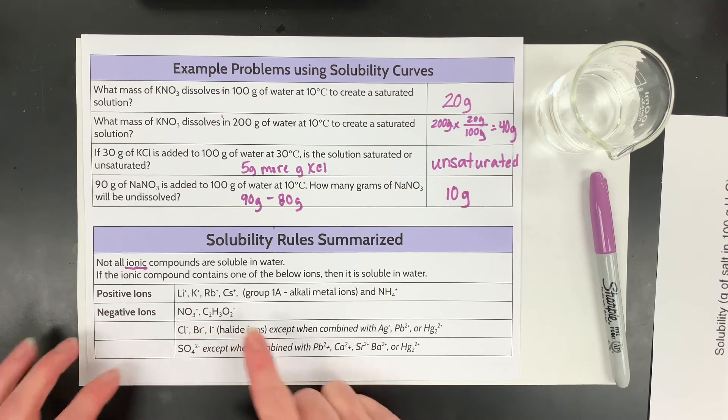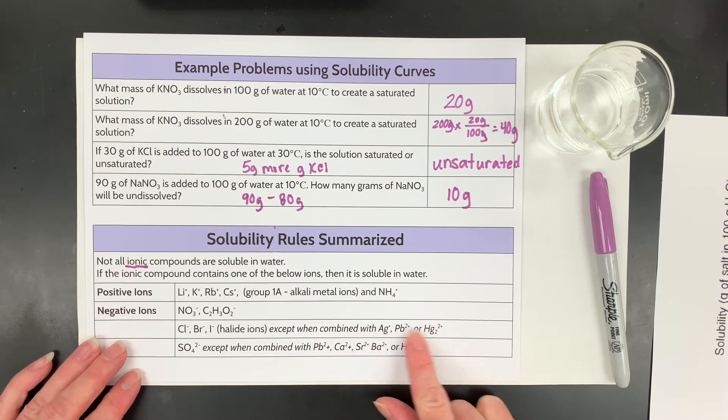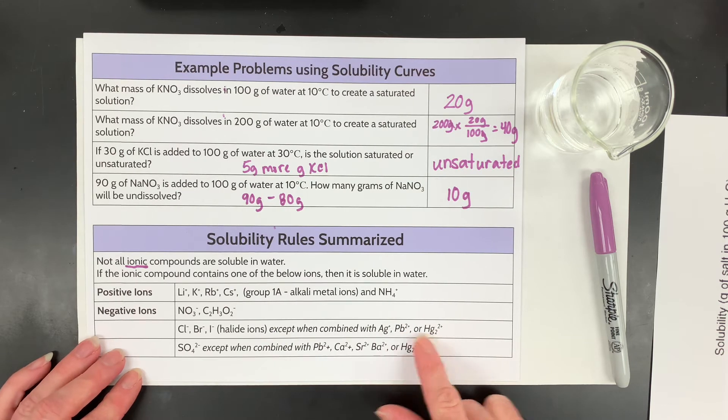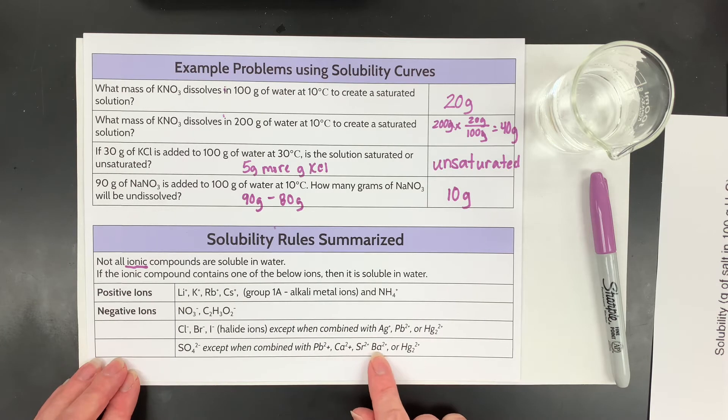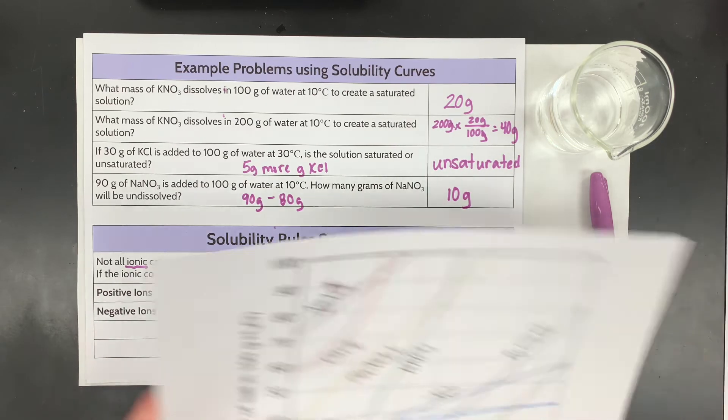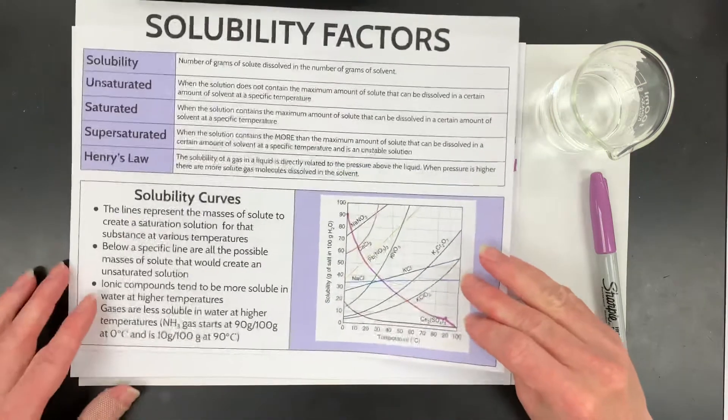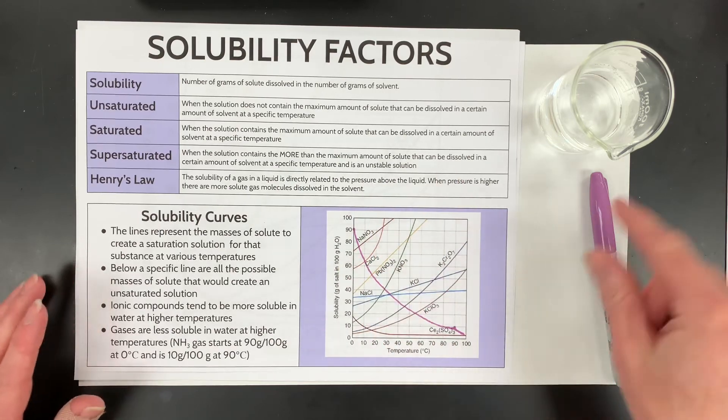And then chlorides, bromides, and iodide, some halide ions are typically soluble but not with some of these heavier metals: silver, lead II, and mercury I. And then sulfates are typically soluble but not with some of these alkaline earth metals, lead again, and then mercury. So that's just some solubility rules that predict that it just won't be soluble at all.